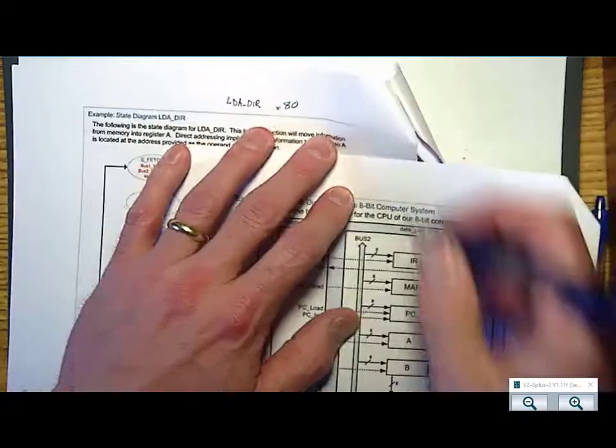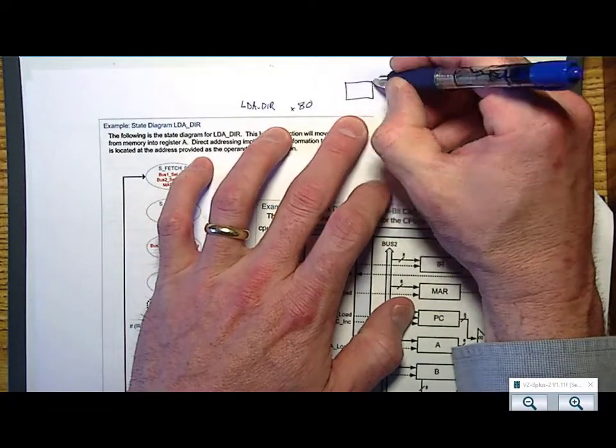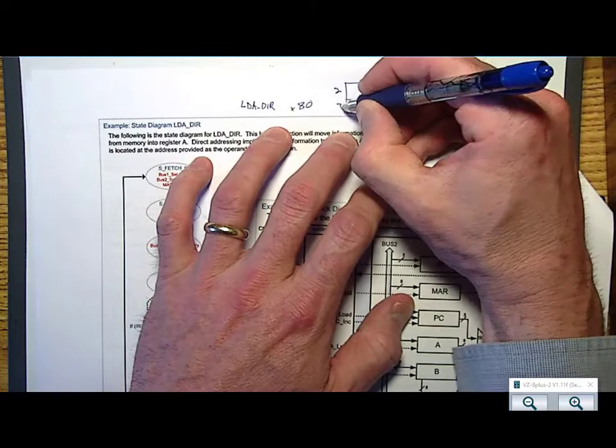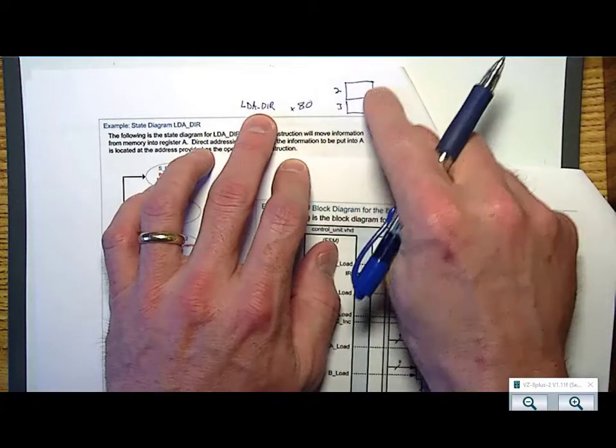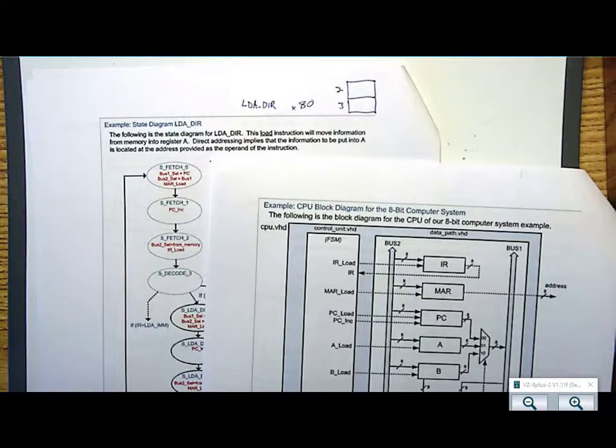If I looked at this in memory, let's say that I put this at address 2 and 3. I would then look and say, okay, LDADIR is actually what opcode? Does anybody remember off the top of their head what opcode it is? It's 87.